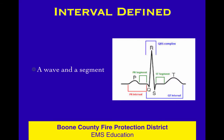Look at where those start and stop. The PR interval starts at the start of the P wave and ends at the Q, or the start of the R wave if there is no Q — that is, the first part of the QRS complex. The QT starts at the start of the QRS and goes to the end of the T wave.